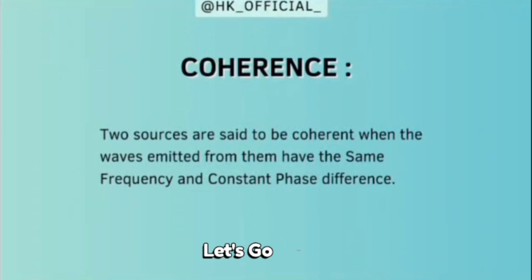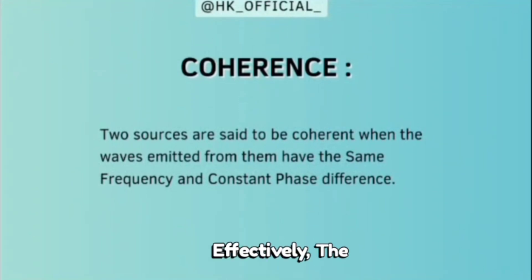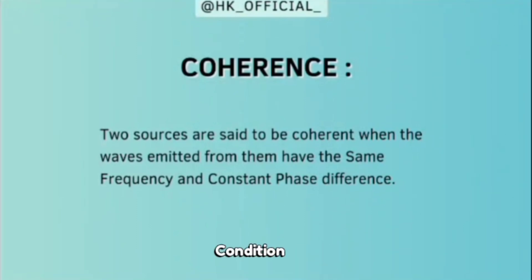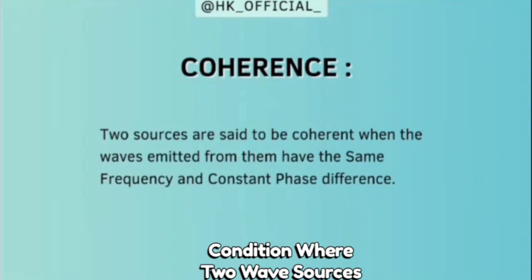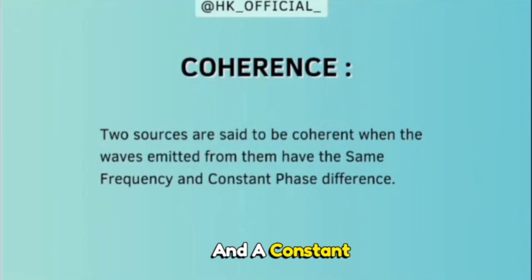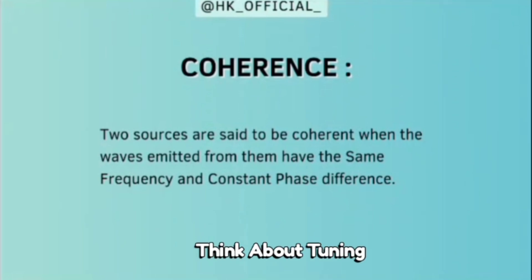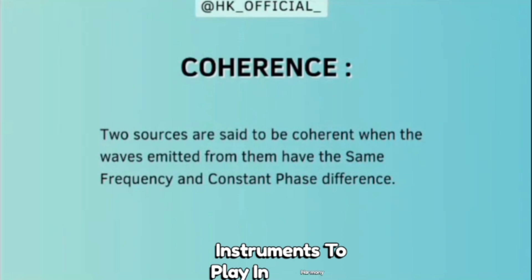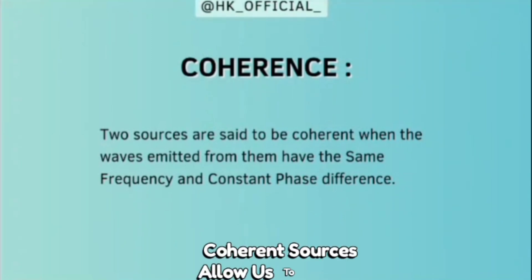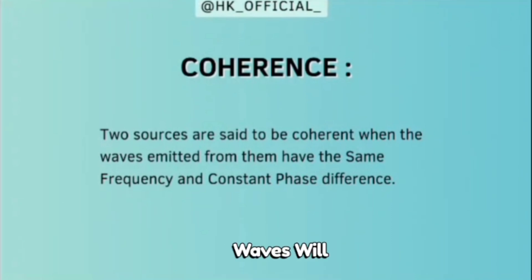Let's go on to the coherence concept. For interference to occur effectively, the concept of coherence becomes essential. Coherence refers to the condition where two wave sources emit waves with the same frequency and a constant phase difference. Think about tuning two musical instruments to play in harmony — how might this relate to waves? Coherent sources allow us to create consistent interference patterns, enabling us to predict how waves will combine.